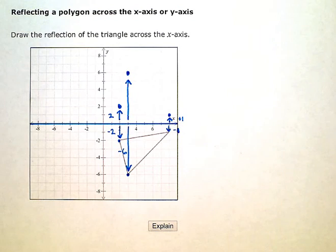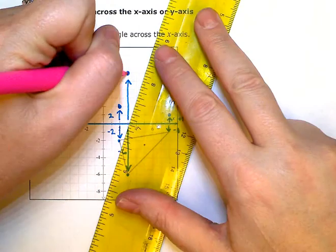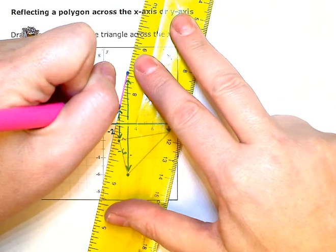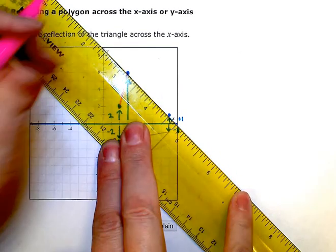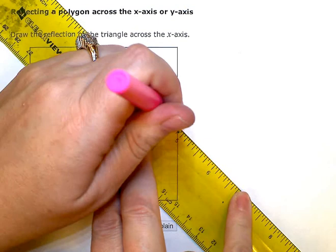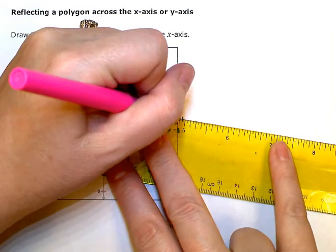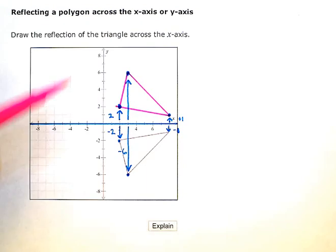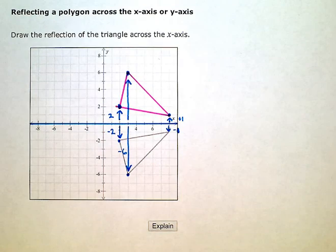And that's my new polygon. So after I have those three points, I just connect them up. And you'll see that my polygon or my triangle there is an exact mirror reflection of the triangle below the axis.